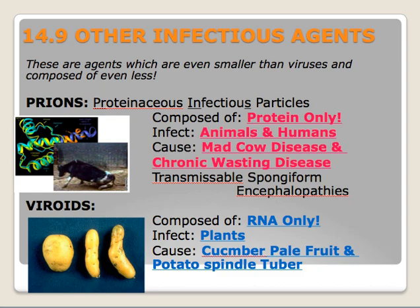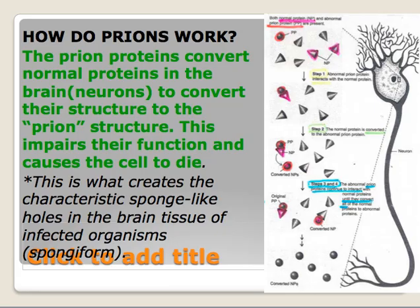So exactly how do prions work? The prion actually goes in — we can see a blow-up here in the cell body of the axon — and the prion protein converts those normal proteins into their prion-type structure. This impairs their function and causes the cell to die. This is what creates those characteristic sponge-like holes in the brain tissue of infected organisms. It's just a simple conversion by contact — that's as much as we know at this point.